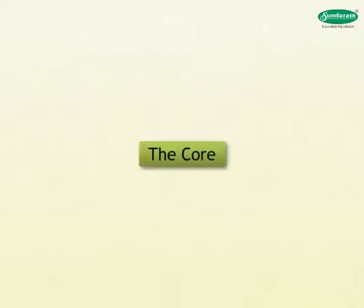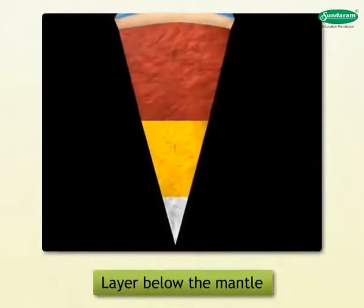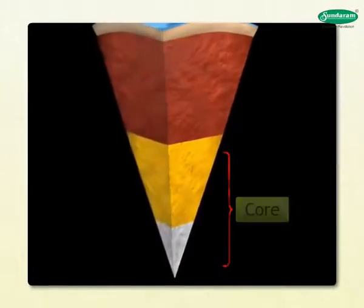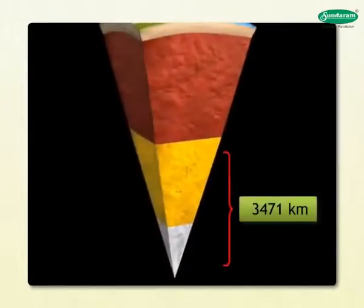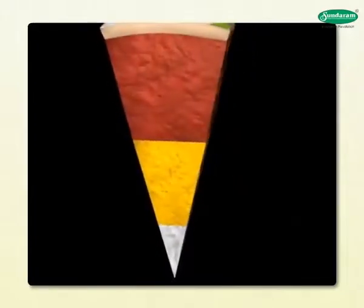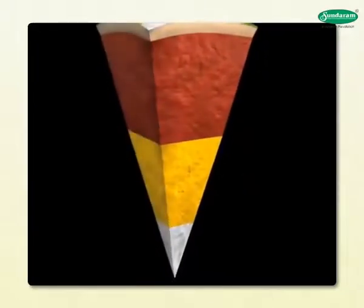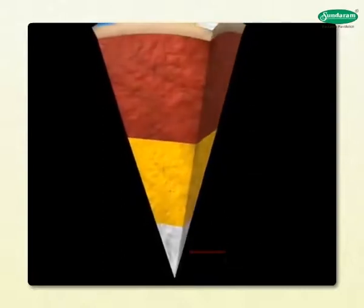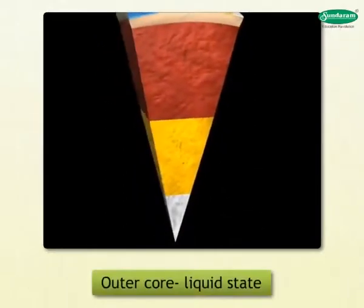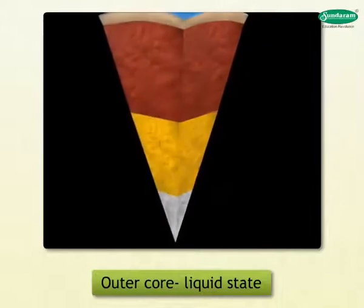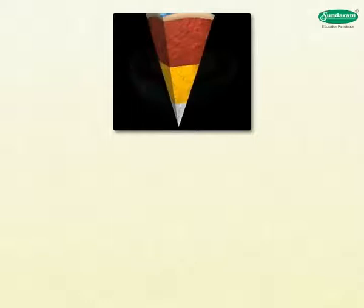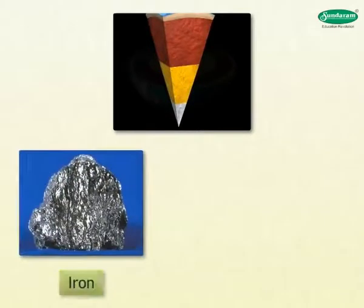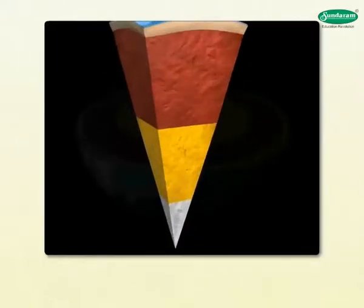The layer below the mantle is called the core. Its thickness is 3,471 kilometers, and it is subdivided into two parts: the outer core and the inner core. The outer core is in a liquid state, while the inner core is in a solid state. The inner core predominantly comprises iron and nickel, so it is called NEFE.